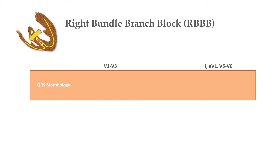Let's now see ECG QRS morphology in right bundle branch block. In leads V1 to V3, there is RSR pattern. Sometimes, rather than an RSR pattern in V1, there may be a broad monophasic R wave, or a QR complex — denoted as small Q and capital R wave, representing a small Q wave and a taller R wave. In lateral leads, there is a wide slurred S wave.